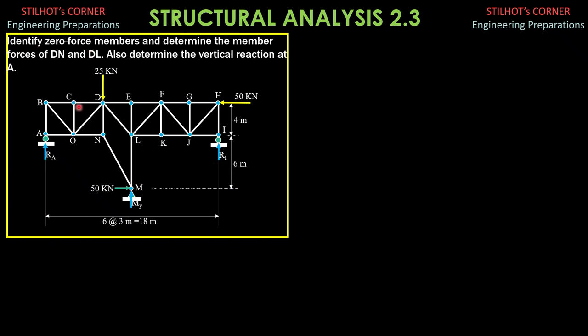So, let's identify zero force members first. At joint C, usually CO is 0. Then, here at joint E, EL is 0. At joint K, FK is 0. At joint G, this is 0, GJ. And, since these are roller supports, the reactions are vertical. So therefore, this AO here is a zero force member. If you sum up forces horizontal, this is also 0 if you sum up forces horizontal at I. So those are the zero force members.